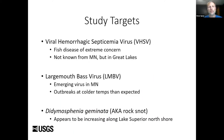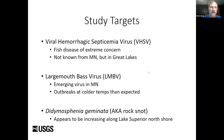That's the approach we wanted to take for three high-priority microbes in Minnesota. These are viral hemorrhagic septicemia virus (VHSV), a fish disease of extreme concern — not currently known in Minnesota, but it's in the Great Lakes and likely on the doorstep. There's also largemouth bass virus (LMBV), an emerging virus in Minnesota with outbreaks in a few lakes, including at temperatures colder than the ideal range for the virus.